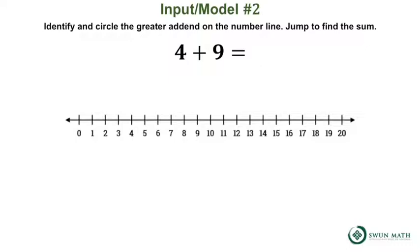Input model number 2. Here we have 4 plus 9 equals. 9 is the larger addend. 9 is not the first addend in the equation, but the sum of 4 and 9 will be the same no matter what order they are added. This is the commutative property of addition.